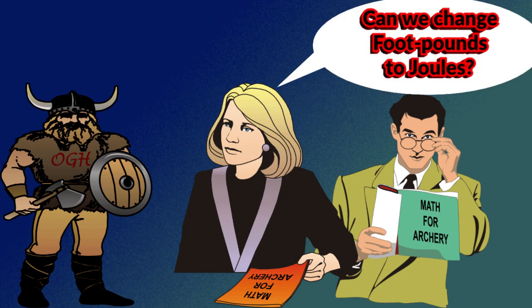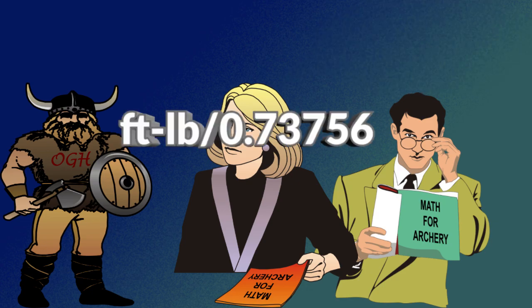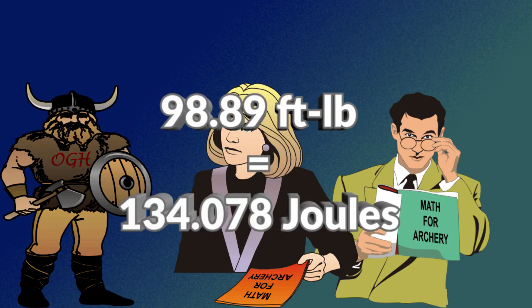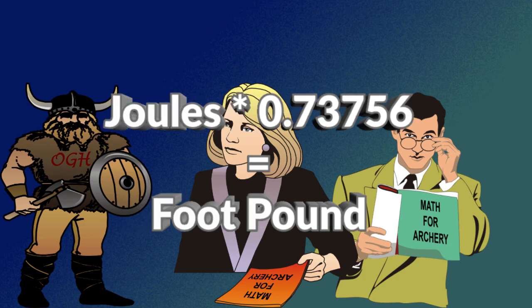Can we change foot-pounds to joules? Divide the foot-pounds by 0.73756. 98.89 foot-pounds equals 134.0777898782 joules. Of course, multiplying joules by 0.73756, you get foot-pounds.